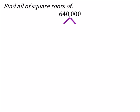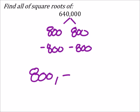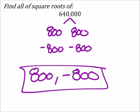Alright, well, this one splits up into: I get 800 and 800, or negative 800 and negative 800. So that's a pair of factors which are the same, that when we multiply them together we get 640,000. So the answer to this one is 800 and negative 800. Thank you.